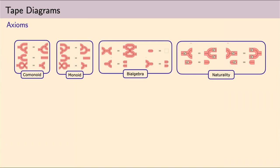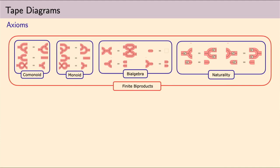Also, the tape diagrams allow for an axiomatization. Again, this branching structure are monoids and comonoids. They interact in the other fundamental way in which monoids and comonoids interact, which is by bialgebras. They are natural. And these are all in all the axioms of finite biproducts.